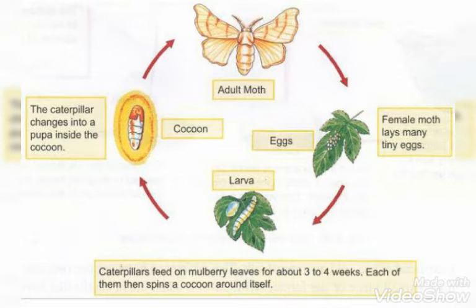The female moth lays many tiny eggs. The caterpillar feeds on mulberry leaves for about 3 to 4 weeks. Each of them then spins a cocoon around itself, and then the caterpillar changes into a pupa inside the cocoon. When the silkworm is inside the cocoon, it is known as pupa.